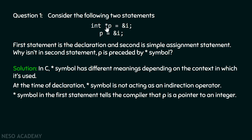Here the star symbol is indicating that p is a pointer to an integer — it is not acting as an indirection operator. The star symbol here indicates to the compiler that this is a pointer and not a normal variable, and this pointer points to an integer variable.